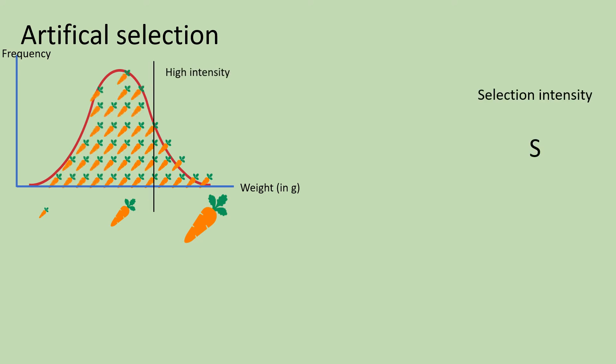If we choose a high value, the selection intensity will be high, and if we choose a low value, selection intensity will be low.